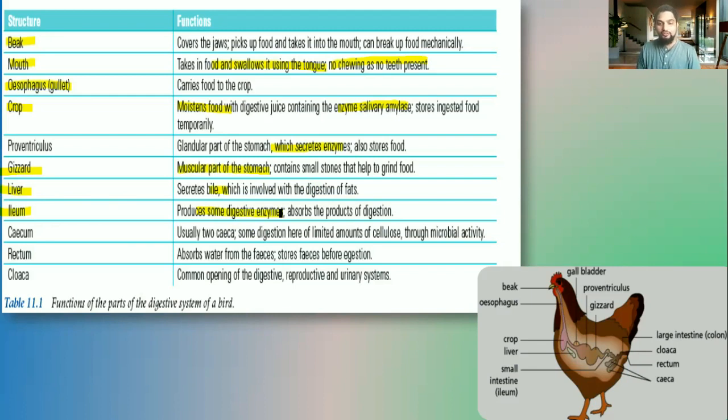Then we have the cecum. There are usually two in poultry. And some of the digestion occur here, limited amount of digestion. The bile does not release enzymes that can digest cellulose. However, inside of the structure, we have microorganisms. And the microorganisms have the ability to digest some amount of cellulose.